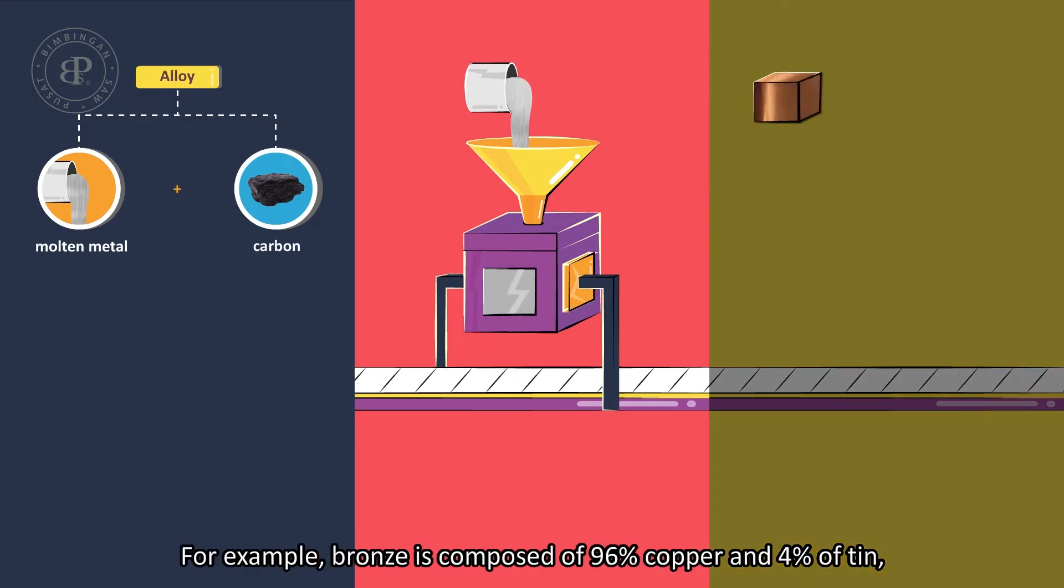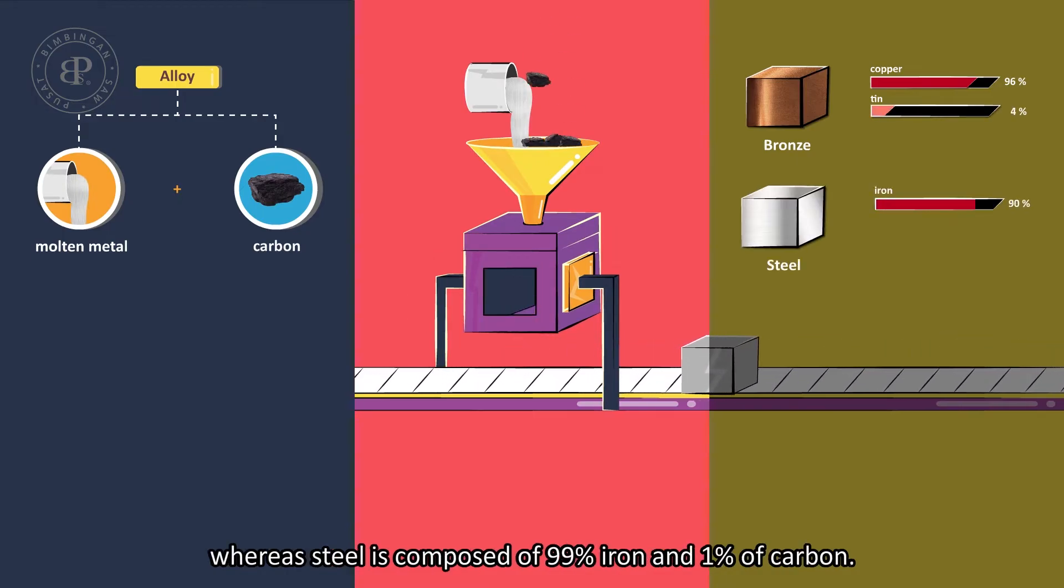The properties of the alloy formed depend on the proportion of each metal present. For example, bronze is composed of 96% copper and 4% tin, whereas steel is composed of 99% iron and 1% carbon.